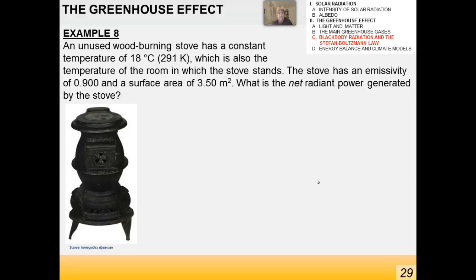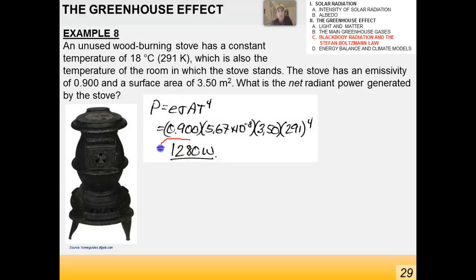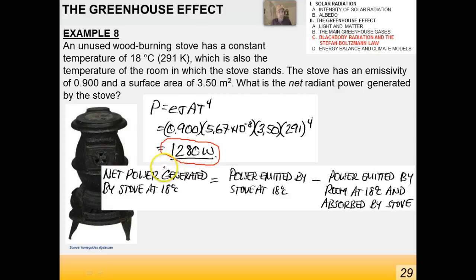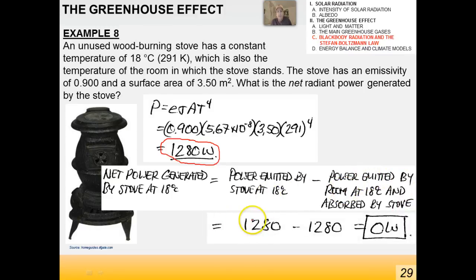Another example: an unused wood-burning stove at the constant temperature of the room, with emissivity not equal to 1 and a known surface area. What's the net radiant power generated by the stove when there's no wood in it? The stove radiates 1,280 joules, but the net power generated is the power emitted by the stove minus the power emitted by the room and absorbed by the stove — it's 1,280 minus 1,280, so there's no net power generated. This is why things don't get colder and colder without limit: when something emits, something else absorbs, and vice versa. We have to think about the system and its surroundings.